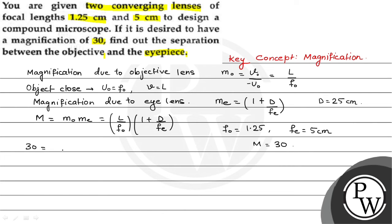Putting all these values, 30 is equal to L upon F0, that is 1.25 cm multiplied by 1 plus 25 by FE. On solving this, we will get 30 is equal to L upon 1.25 multiplied by 1 plus 25 by 5 is 6. L will be equal to 30 into 1.25 divided by 6. And that will be equal to 6.25 cm.